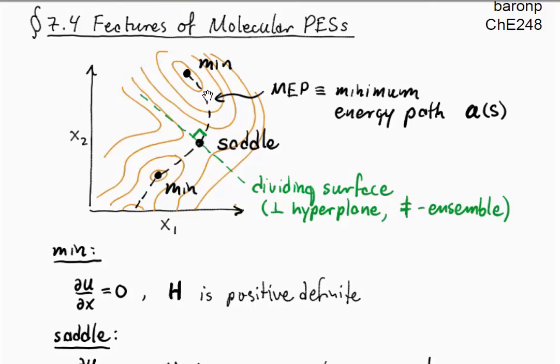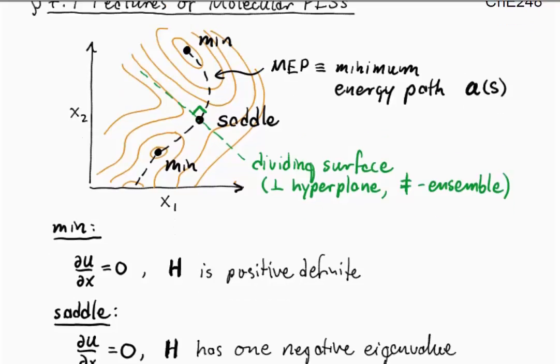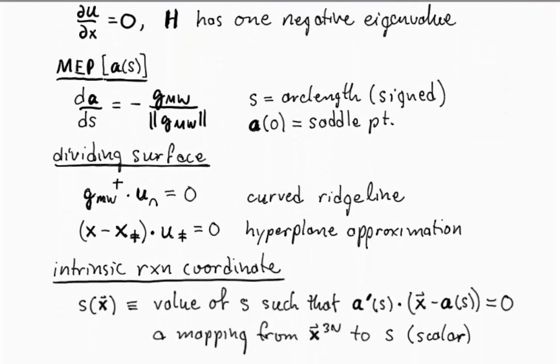For our purposes though, this is just a steepest descent path parametrized by its own arc length, and it's parametrized usually in such a way that the arc length is signed. So when you move from the saddle point down to the product state, you're moving in the positive direction along the arc length coordinate, and when you move from the saddle point down to the reactant state, you're moving in the negative direction along the arc length coordinate, and we usually make the initial condition corresponding to the saddle point S equals zero, and this gives us a natural coordinate system.